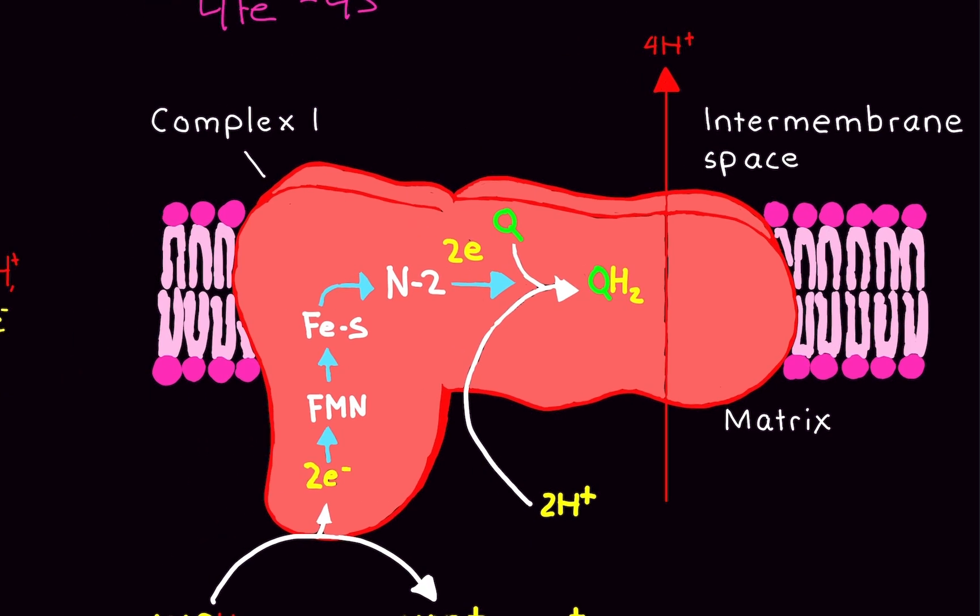Now, the important part. Ubiquinone, or Coenzyme Q, is going to come along and pick up those two electrons. Now, Coenzyme Q, we went over it. It's an amazing electron carrier. Now, here's the thing. When Q picks up the electrons, it's once again very unstable. So it needs protons to stabilize it. So two protons from the matrix are going to come along and help stabilize it, fully reducing ubiquinone to ubiquinol.